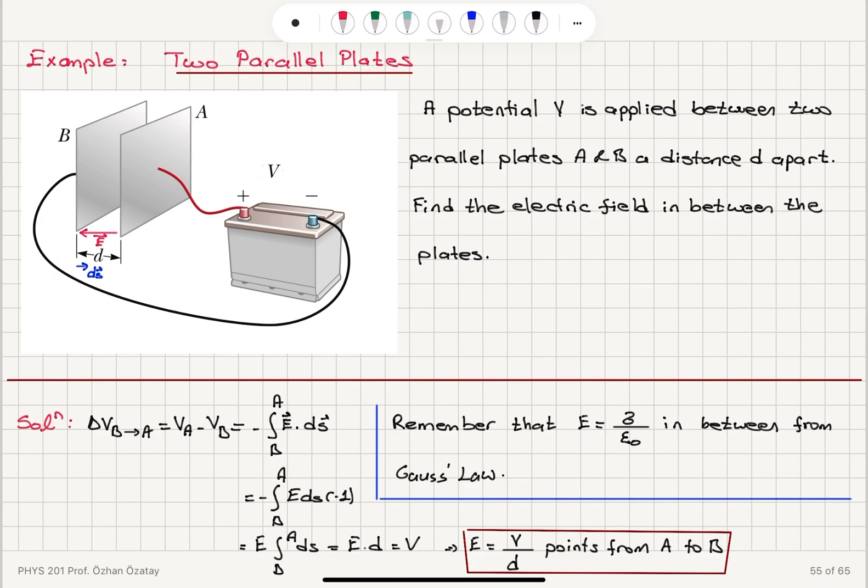Or going from B towards A, I see an increase in the potential. And the electric field points from positively charged plate to negatively charged plate. So it's from A to B.